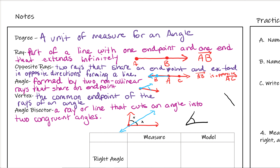For angles, we have something similar by drawing little arcs. Both angles having one arc means they're congruent. If there's a different group of congruent angles, you might see two arcs — they're congruent because they have the same number of arcs. If one has one arc and one has two, they're not congruent. We can also write x to show both angles have the same measure.